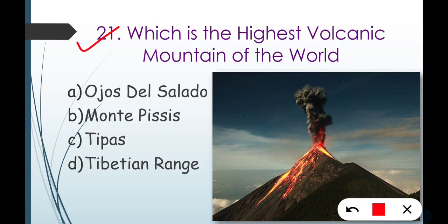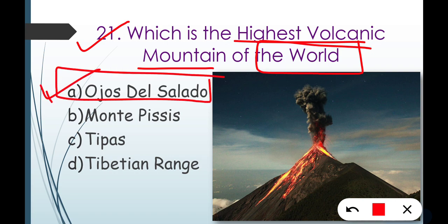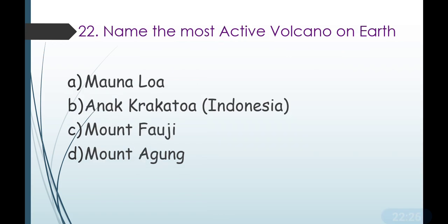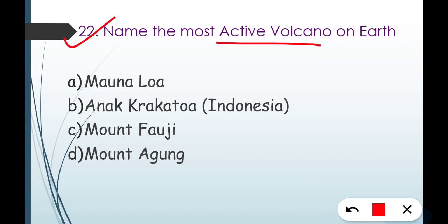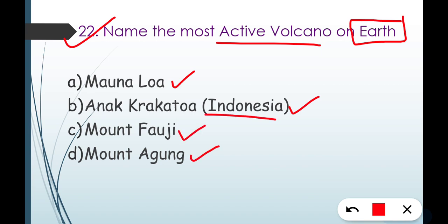Question number twenty-one: which is the highest volcanic mountain of the world? Options are Ojos del Salado, Mount Pissis, or Tibetan Range. The correct answer is Ojos del Salado. Question number twenty-two: name the most active volcano on Earth. Options are Mauna Loa, Krakatoa (Indonesia), Mount Fuji, or Mount Agung. The correct answer is Option A — Mauna Loa, the most active volcano on Earth.